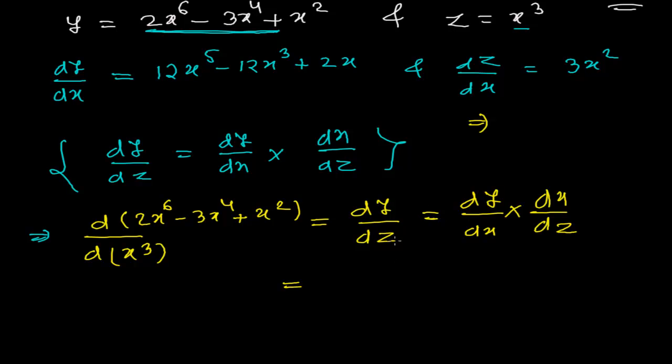So now dy/dx you know already. dy/dx recently you found out, here. So it is 12x^5 - 12x^3 + 2x, times 1 over, now I'm just writing the reciprocal of this, that is 3x^2. And then when this 3x^2 divides each of this, you'll get 4x^3 - 4x + 2/(3x). Answer.